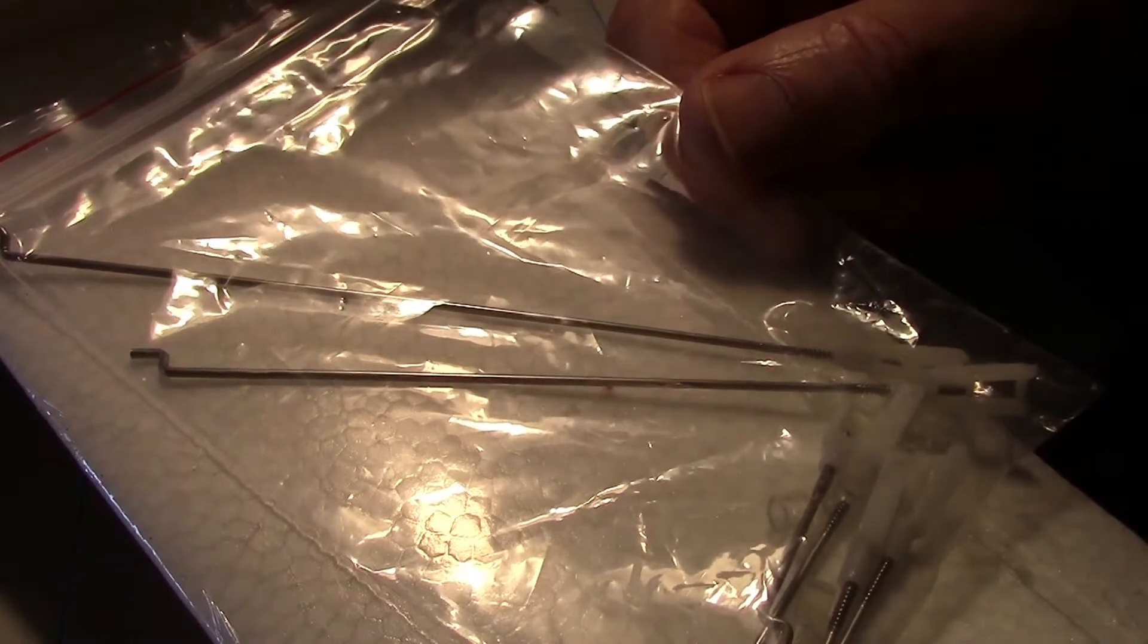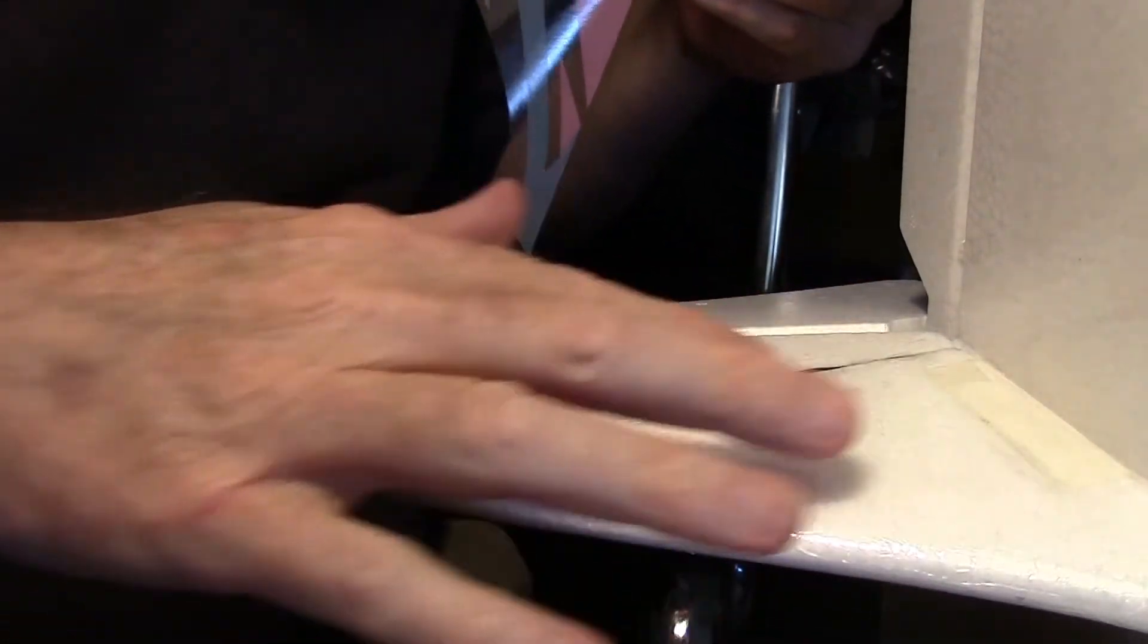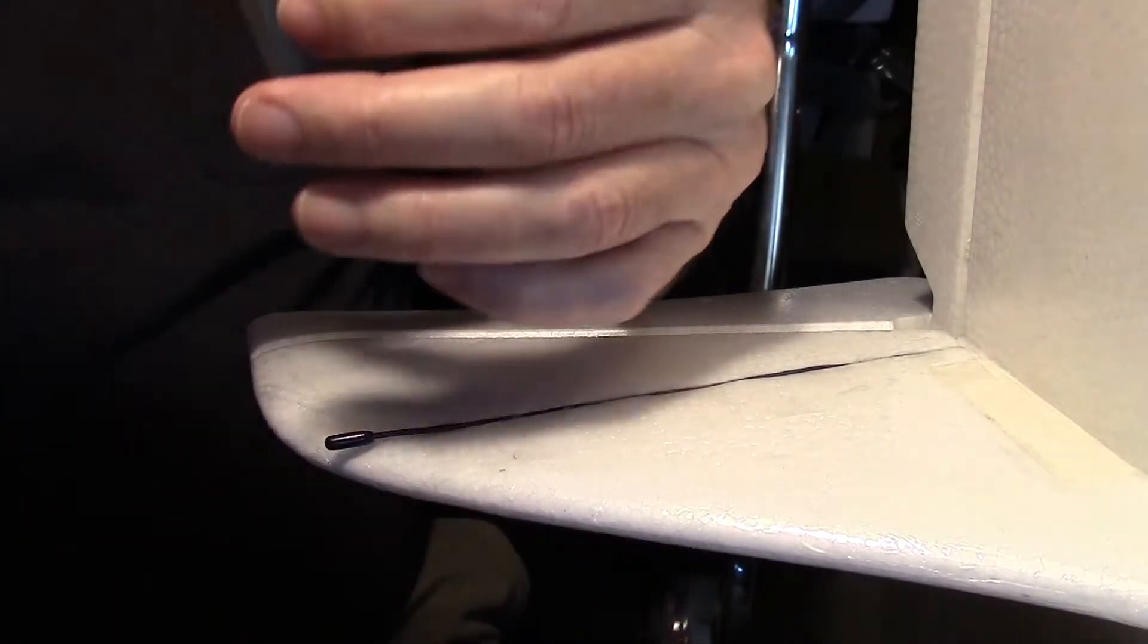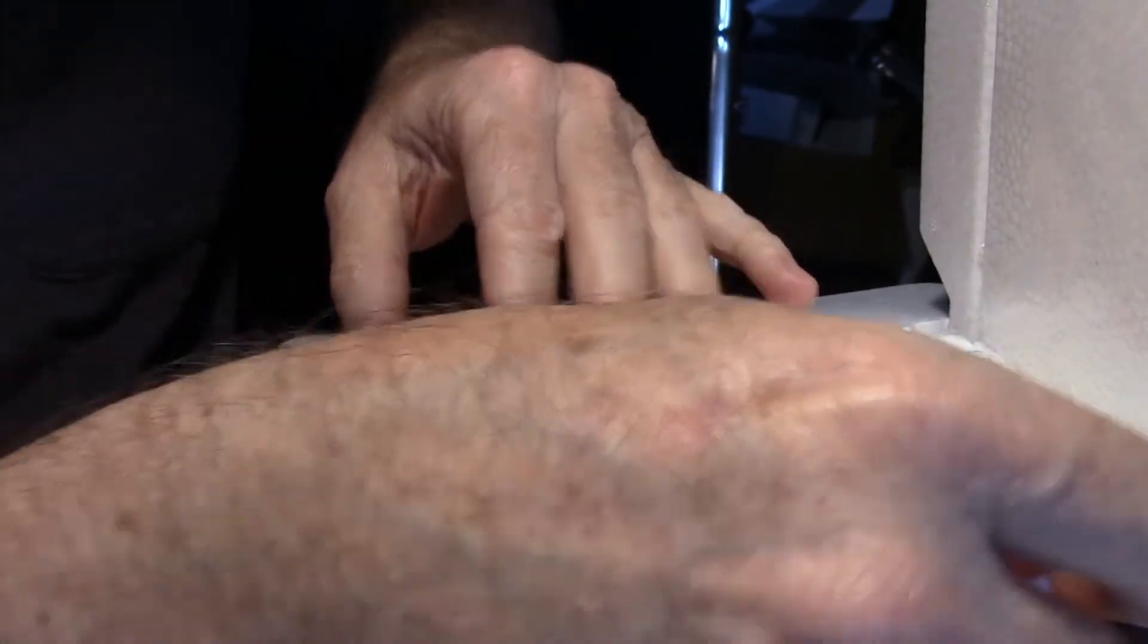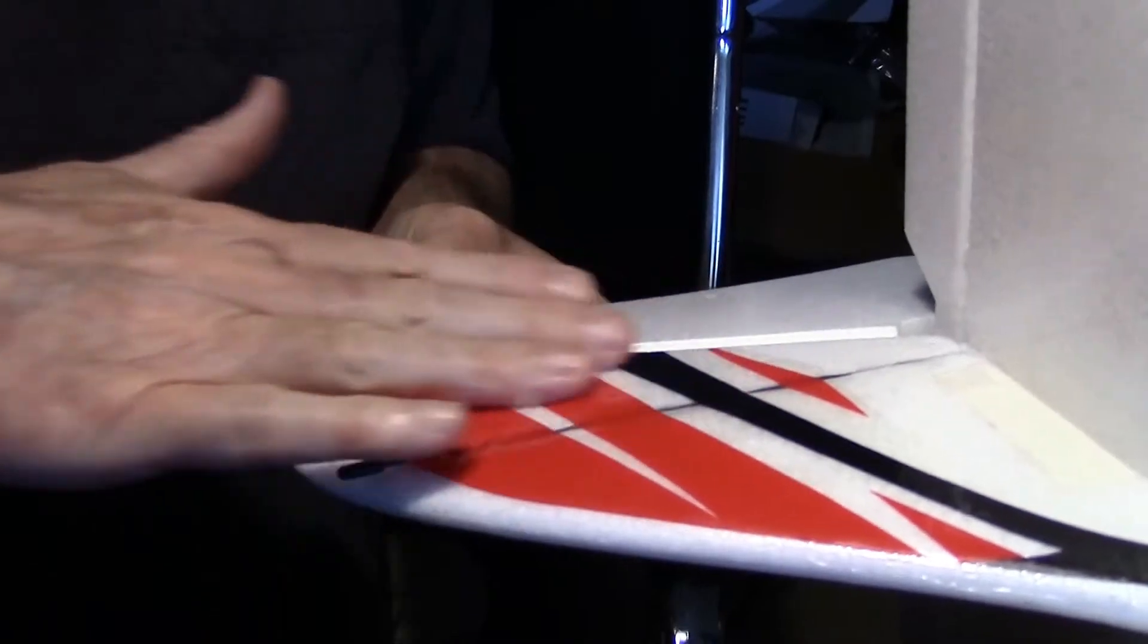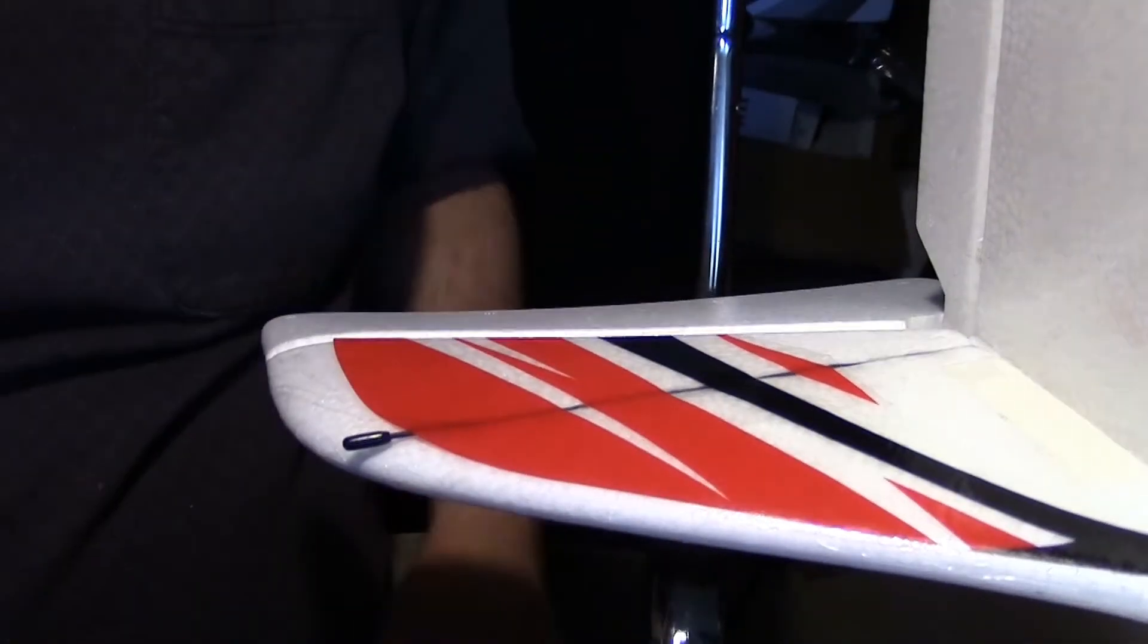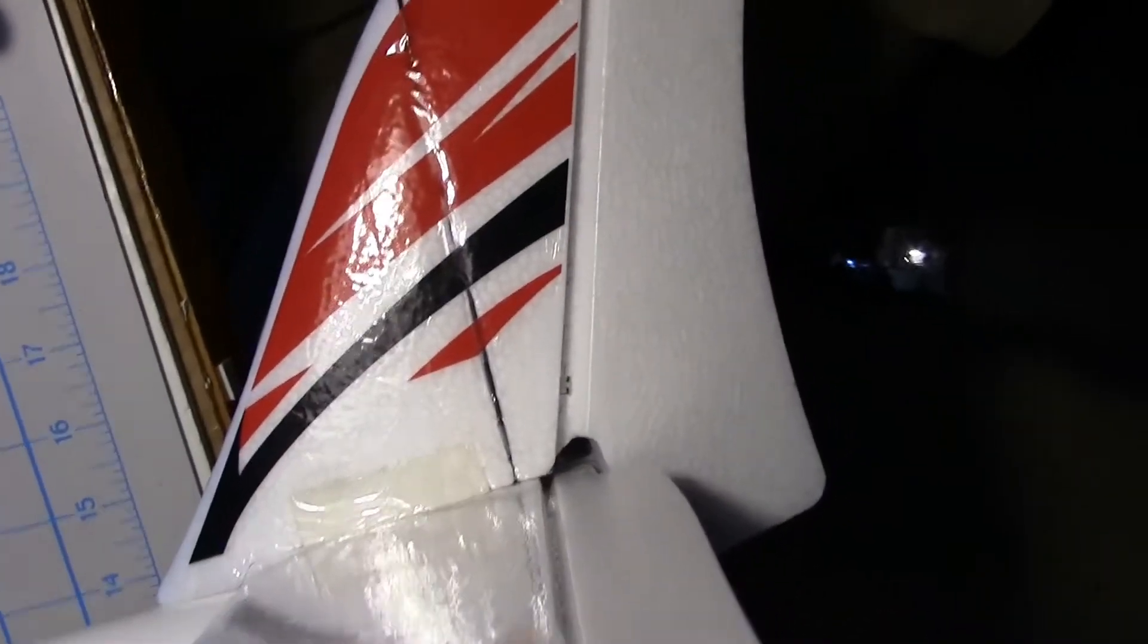I'll be putting the control rods on later after I finish the plane. I put some laminating film over the antenna and I think now is a good time to put on the decal right over the top of it. I'm committed now. There we go, it's on there. That hides the antenna, not completely but pretty good.